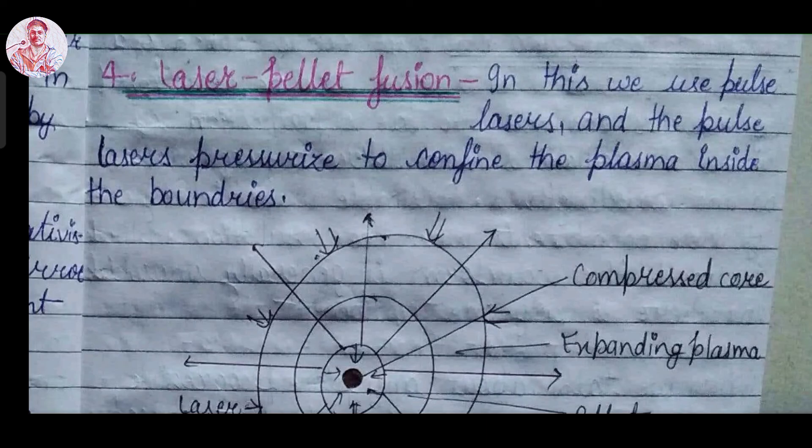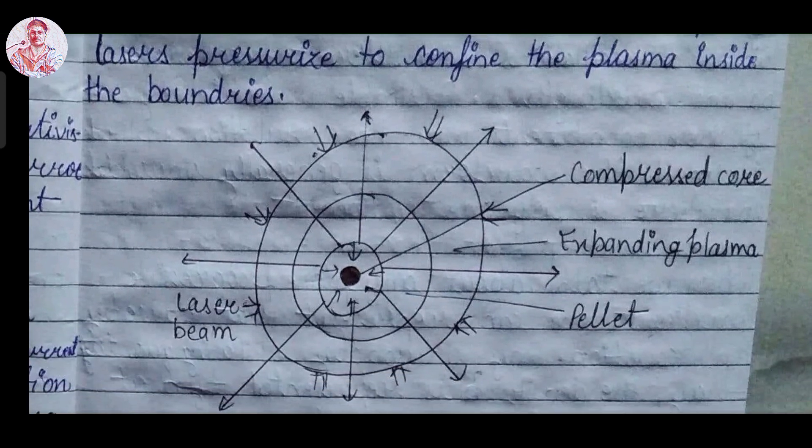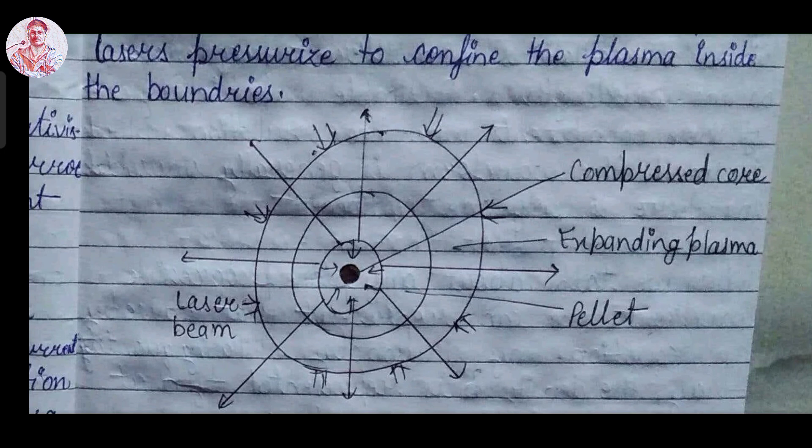Now we have the fourth technique of plasma confinement which is laser pellet fusion. In this, we use pulse lasers. And the pulse laser pressurizes to confine the plasma inside the boundaries. We want to confine plasma somewhere in the middle. So we fire the laser on the material from the outside. Due to this, the plasma is produced and also confined there. The scheme to ignite a fusion reaction using pulse lasers consists of a converging laser beam on a small pellet of solid deuterium-tritium material, producing a rapid symmetrical heating of the plasma.